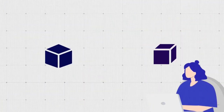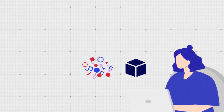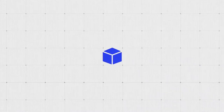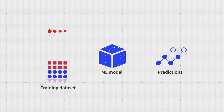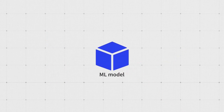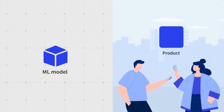The ML engineer would experiment with several models and a subset of data to find the one that fits the task. During the training process, a model will learn to make predictions by finding patterns in the training dataset. You also need a testing set of historical data to evaluate whether the model gives accurate forecasts. If it passes the test, we have a model that can make predictions. But the model isn't a part of our product yet, and our customers can't use it.